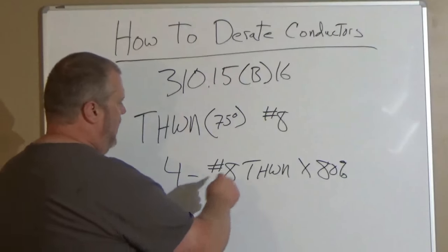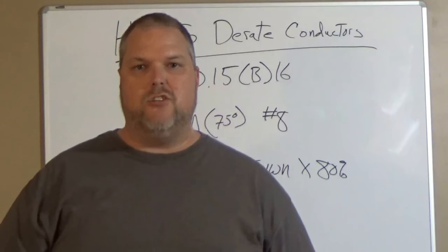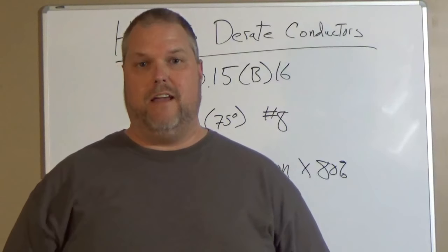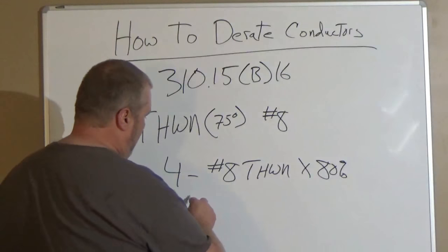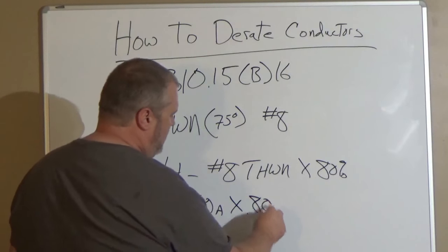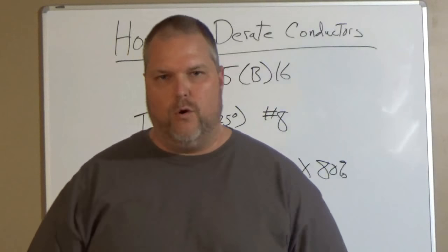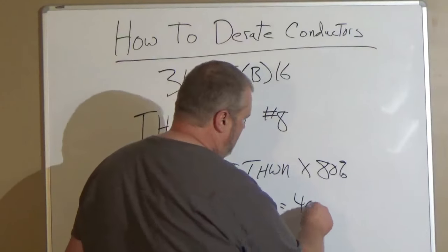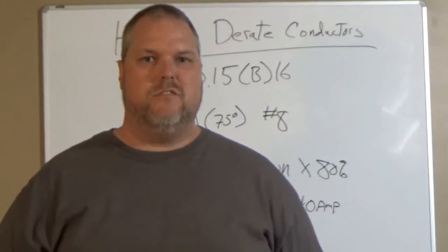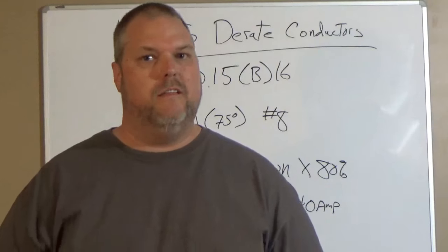So what do I do? If I look into 310.15.B.16, THWN in the 75-degree column, if I go down to a number 8 conductor, it's going to tell me that I can use 50 amps. So I have 50 amps. I'm going to multiply it by 0.80, and that will give me 40 amps. That means that those four conductors running in that conduit is now only rated for 40 amps, not 50 anymore.